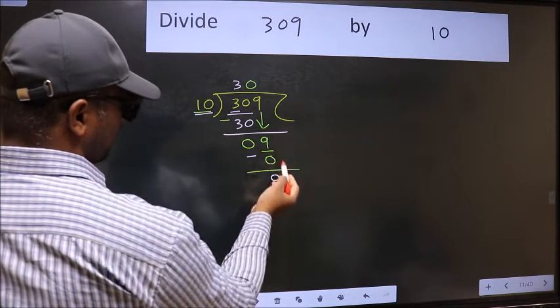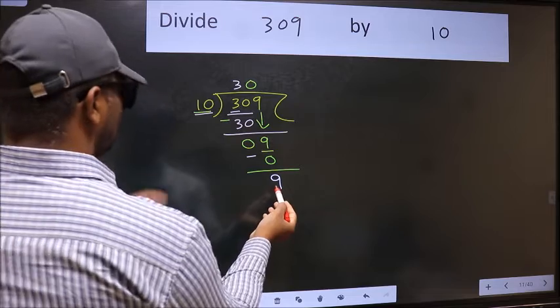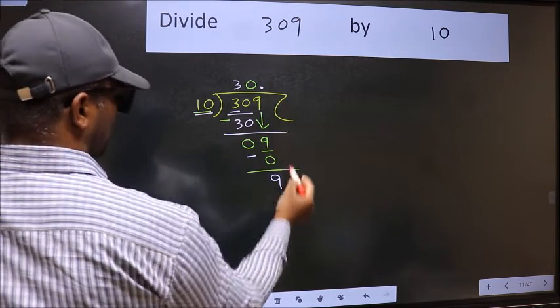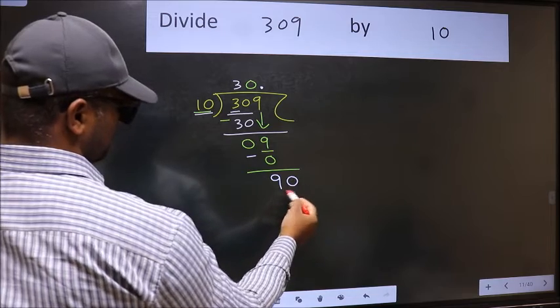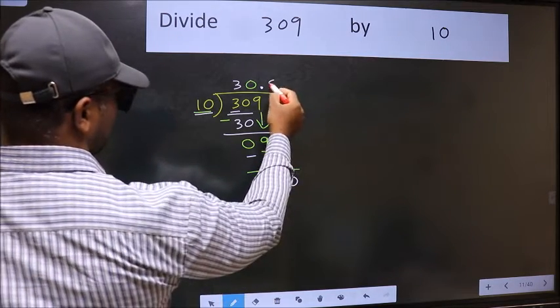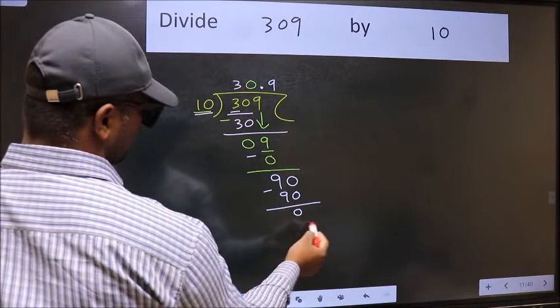Over here, we did not bring any number down, and 9 is smaller than 10. So now we can put dot and take 0. So 90. When do we get 90 in 10 table? 10 nines, 90. Now we should subtract. We get 0.